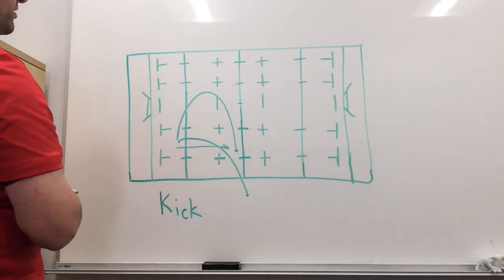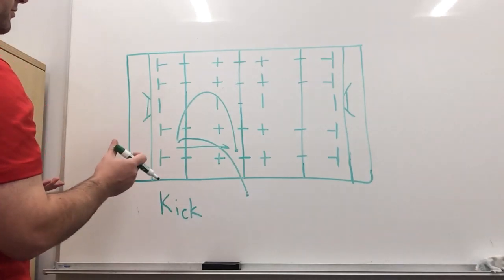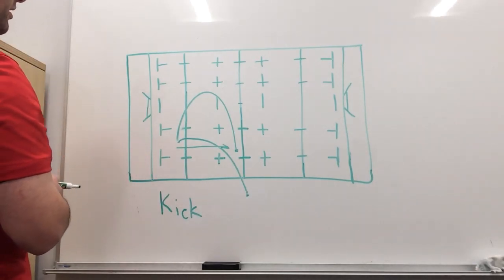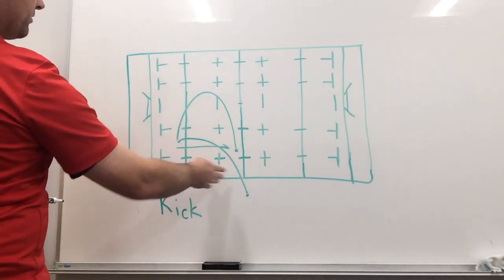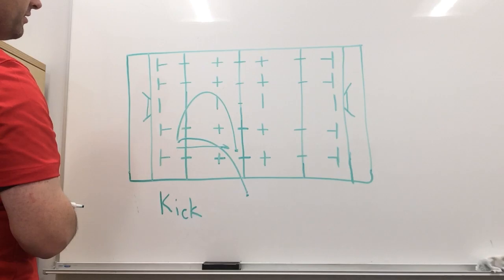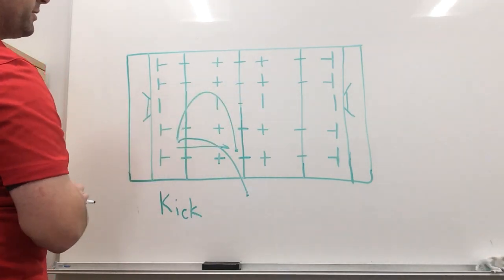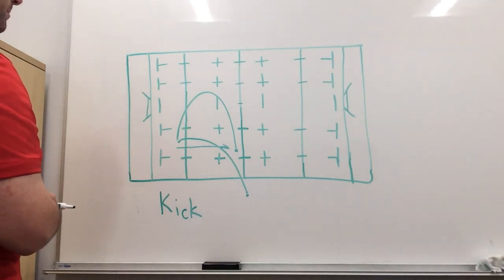Now there are some situations we are going to want to run the ball out. One of those might be simply the game is almost over. Maybe we're down by two points and we're in the 80th minute. We don't want to be kicking that ball to touch because we have to have possession to score. So we're just going to keep running until we get into a position to score and win the game.